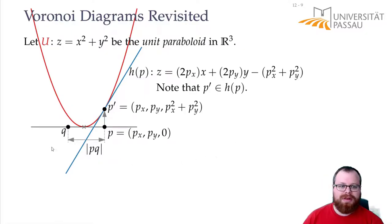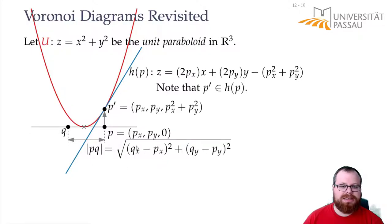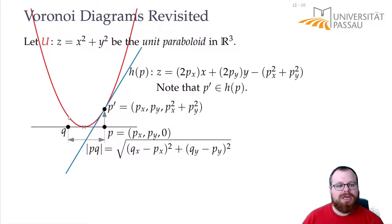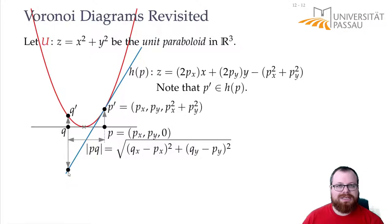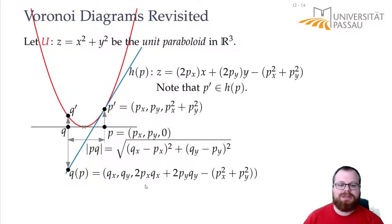Now let's take another point Q. The distance between these two points is the Euclidean distance in two-dimensional space — that's the square root of the difference of the x coordinates squared plus the difference of the y coordinates squared. We can again project Q upwards to the unit paraboloid, but we can also project it downwards to the half-plane of P. This gives us some point Q(P), with the same x and y coordinates as Q, and the z coordinate from the formula of H(P): 2Px·Qx plus 2Py·Qy minus Px squared plus Py squared.